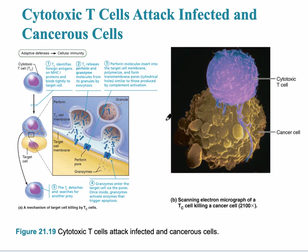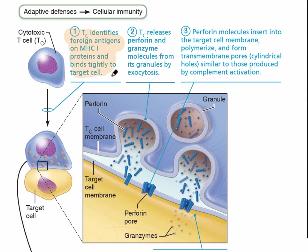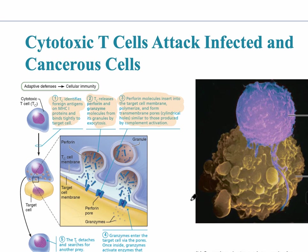This slide shows the cytotoxic T-cells as they're affecting cancerous cells. The T-cell identifies foreign antigens and binds tightly to the target cell. The cytotoxic T-cell — that's what the 'Tc' means — releases the perforin, similar to natural killer cells, but this is the adaptive immune response, so it's much more antigen-specific. The perforin molecules insert into the membrane and cause holes, causing the cell to burst. Once it's destroyed its prey, it detaches and searches for more.